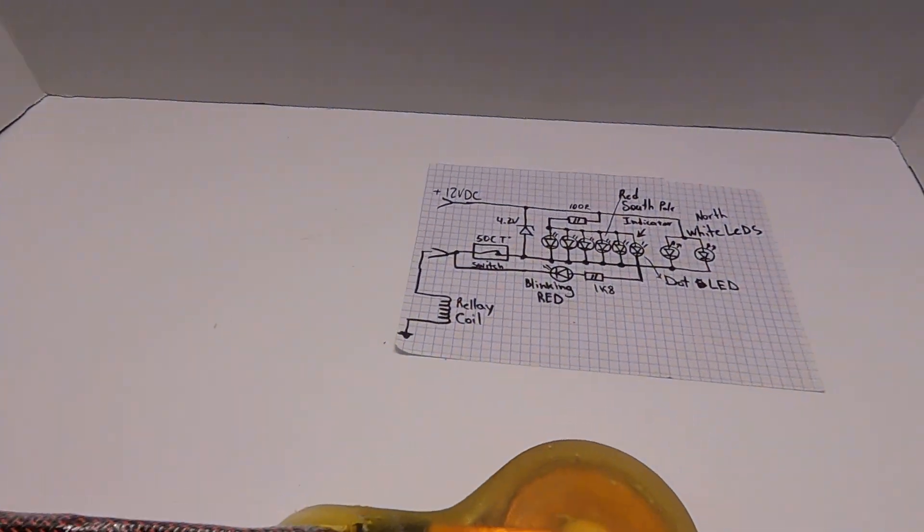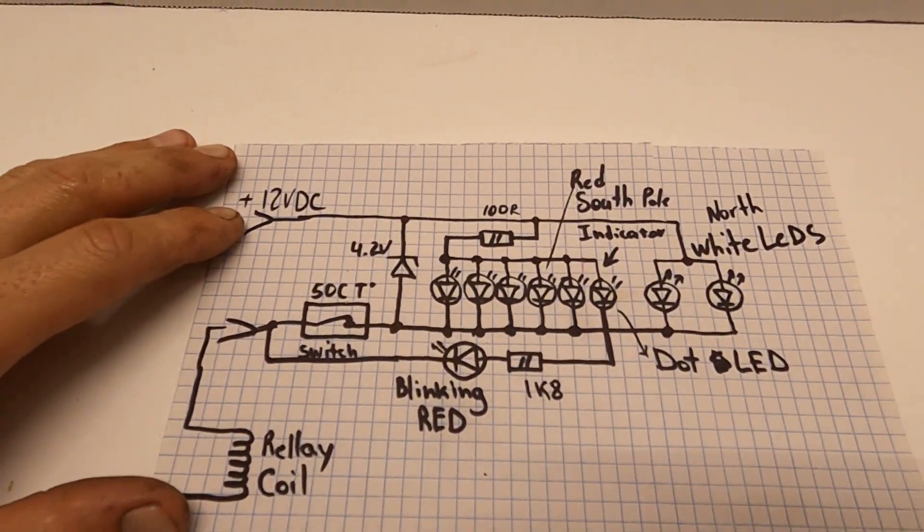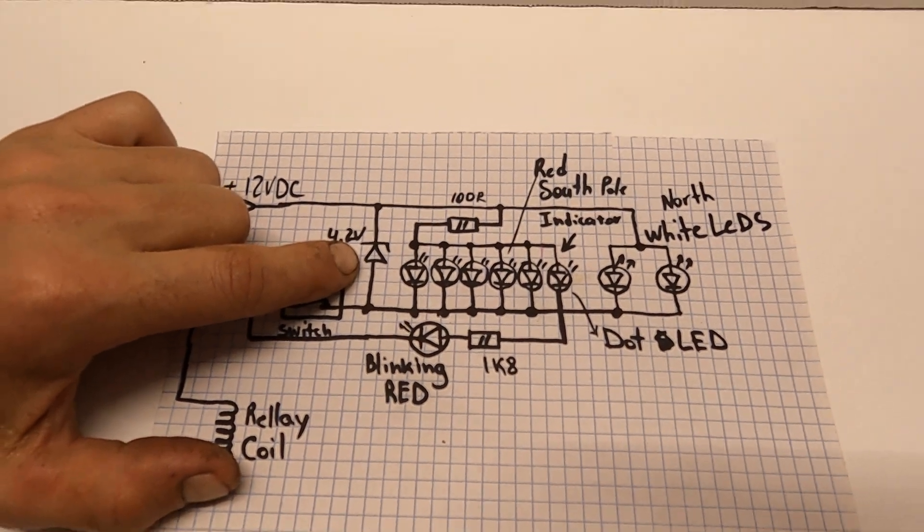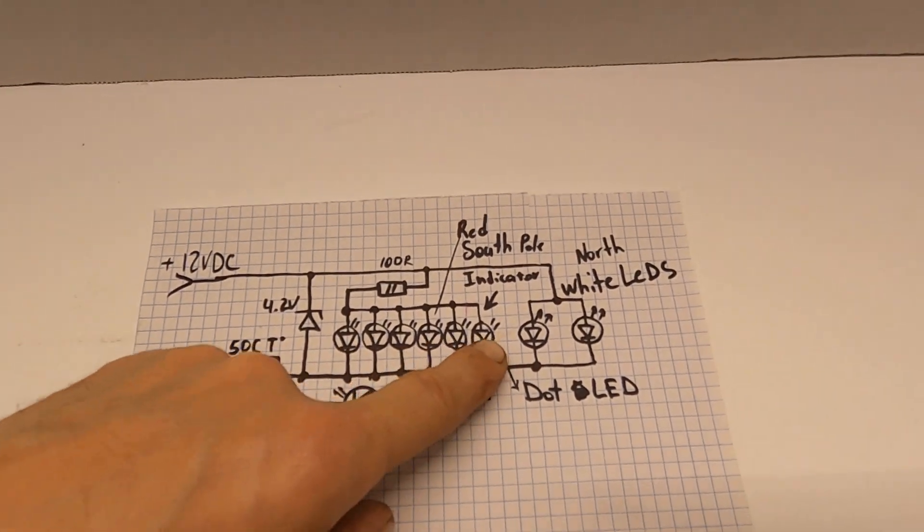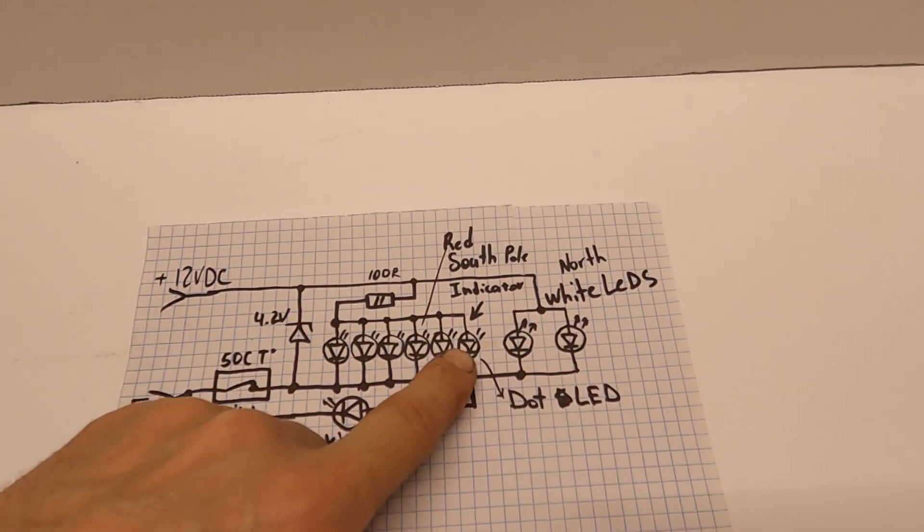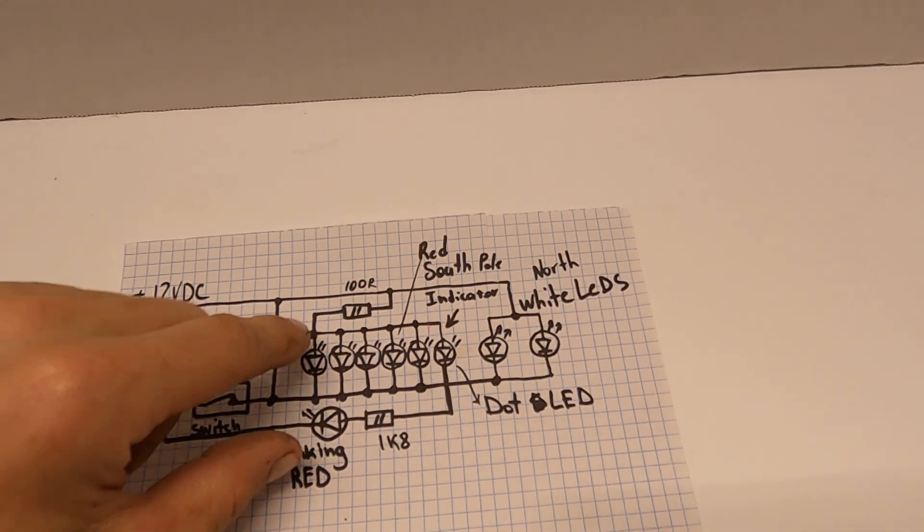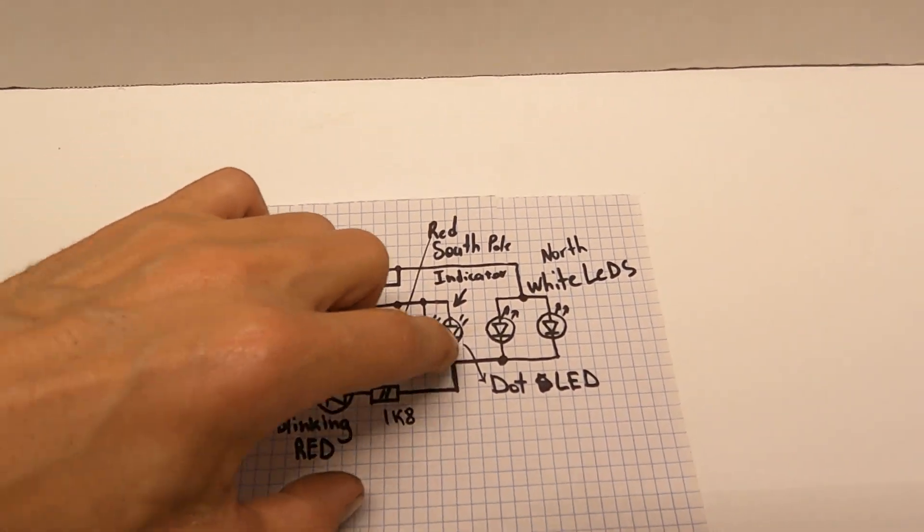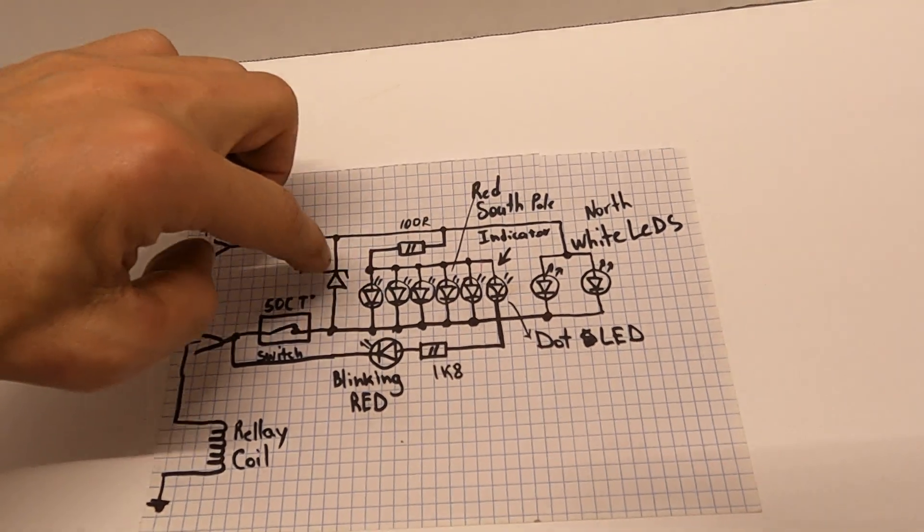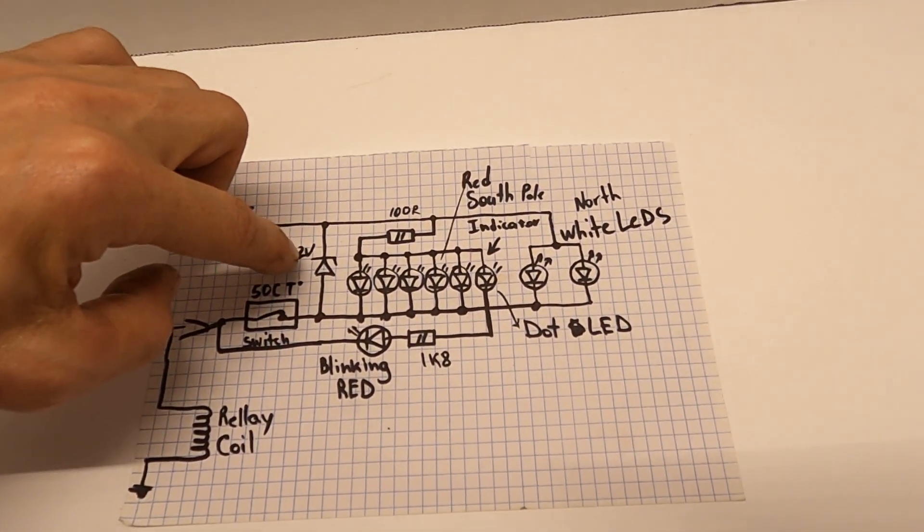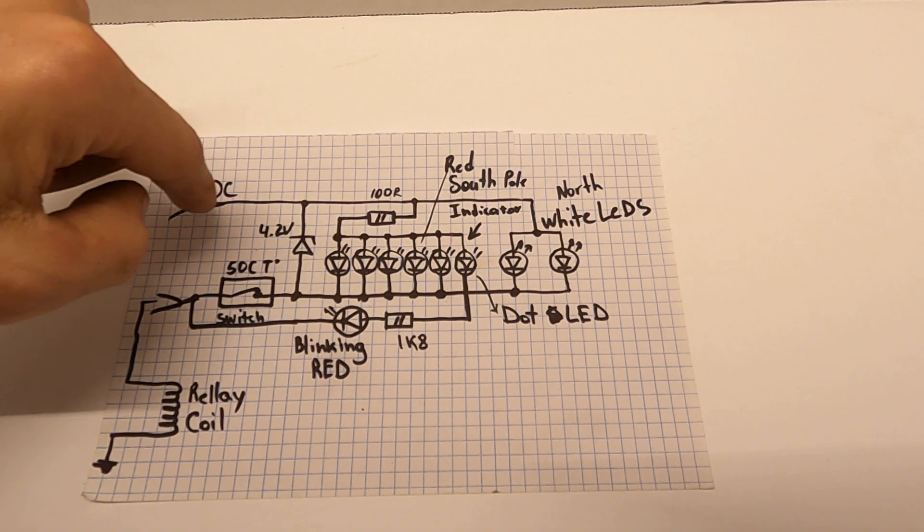Also, I wanted to mention that this circuit has a safety built in. This 4.2 volt Zener here is for anytime these LEDs will start burning out. In case they start burning out and current wouldn't be able to go through them to trigger through the thermal switch to trigger the relay.